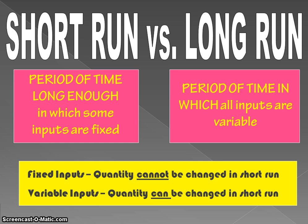Fixed inputs, by definition, are things that can't be changed in the short run, whereas variable inputs can be changed in the short run. We can't increase the amount of our fixed inputs in the short run — we could in the long run, but not in the short run. Variable inputs, on the other hand, we can vary the quantity we're using in the short run.